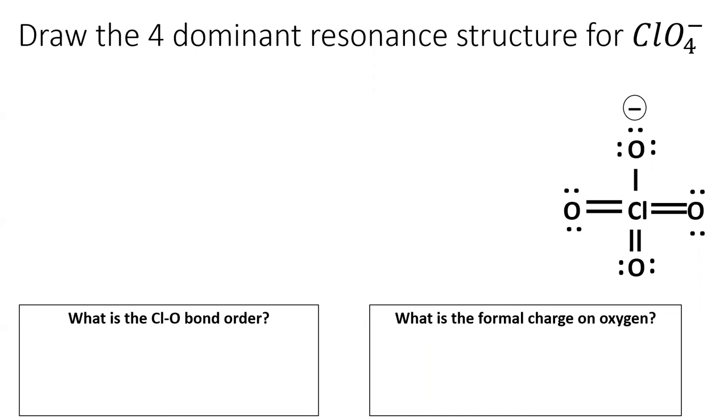Time for a bonus question. Draw the other three dominant resonant structures for perchlorate. Then calculate the ClO bond order and the formal charge on oxygen.